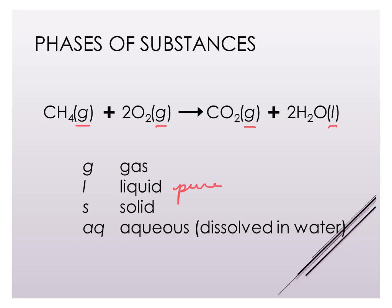Now we can have an equation which represents everything that's going on: it tells us the identity of the compounds, how many of each compound we need relative to the amounts of the other substances, and the phase of each substance.